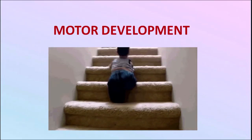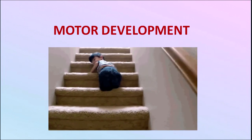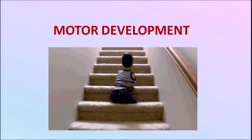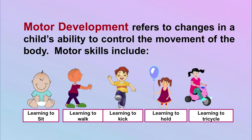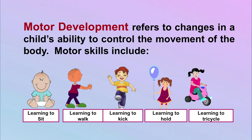Now I will discuss motor development. As seen in the picture, the child is quite active and trying to come down from stairs. Motor development refers to the changes in a child's ability to control the movement of the body. Motor skills include learning to sit, learning to walk, learning to kick, learning to hold, and learning to ride a tricycle — activities where the child employs all the muscles in day-to-day activities.